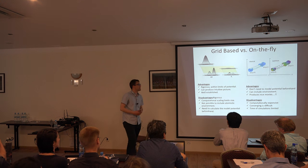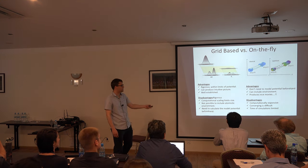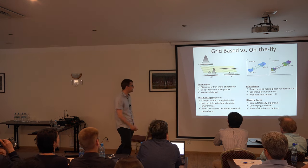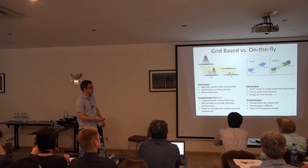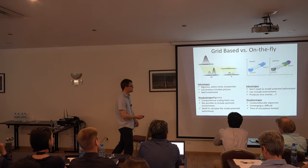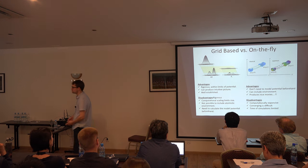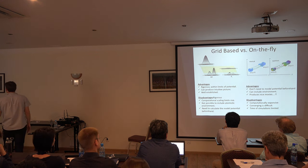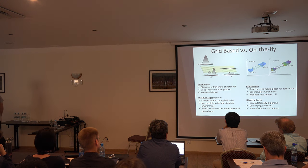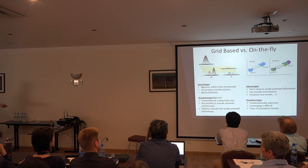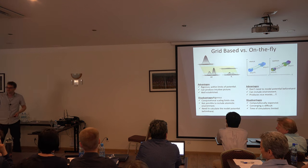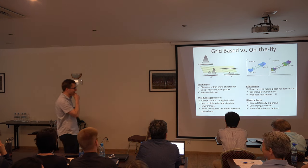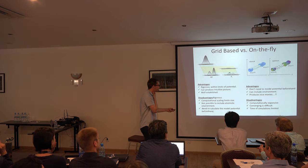If we go for the on-the-fly approach, we don't need to calculate the model beforehand — we can just put it in, potentially calculated on the fly. We can include the environment, so it's a lot easier for these on-the-fly methods like trajectory surface hopping to include an atomistic description of the environment and also the coupling to it. And if you're looking to publish in one of the glossy journals, it produces very nice movies that experimentalists love.